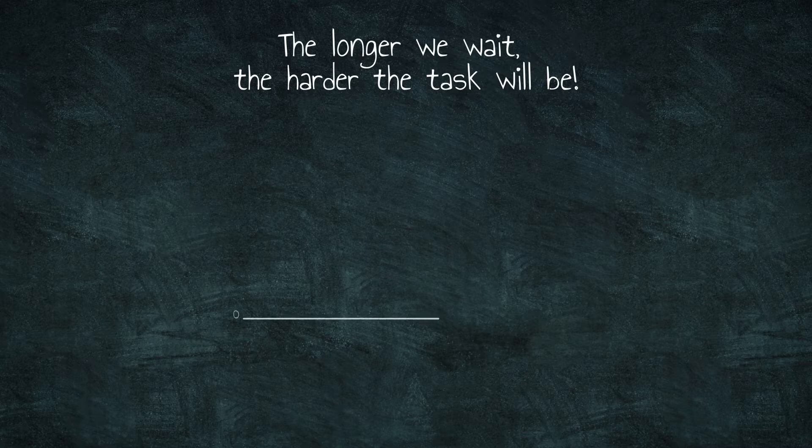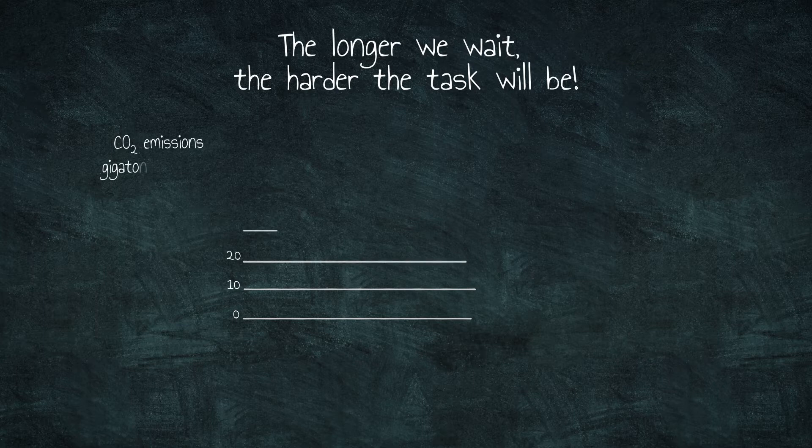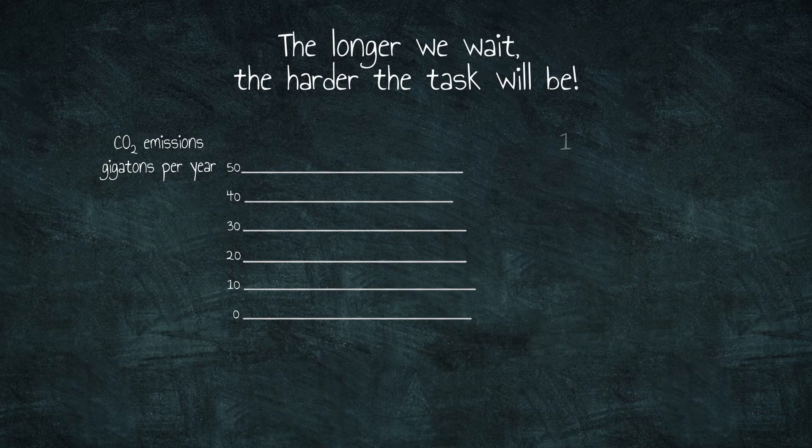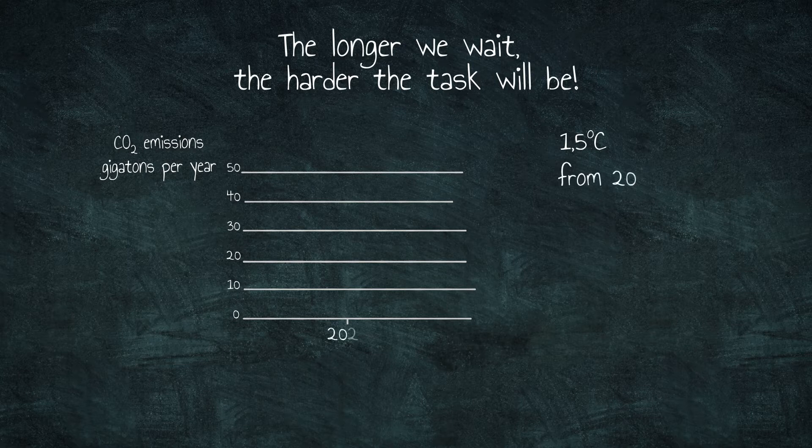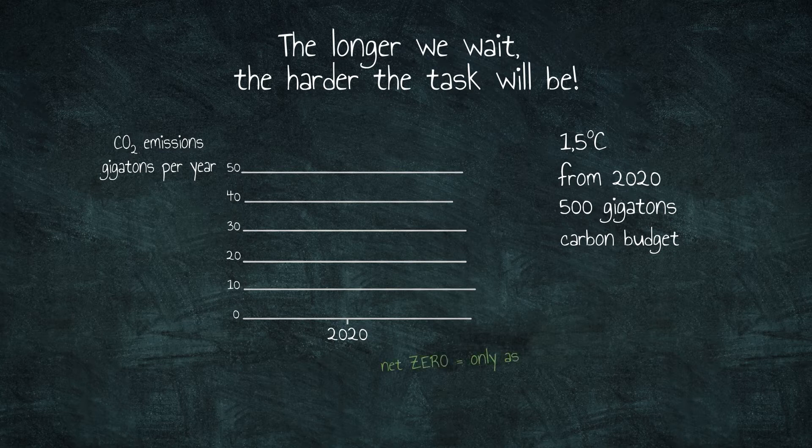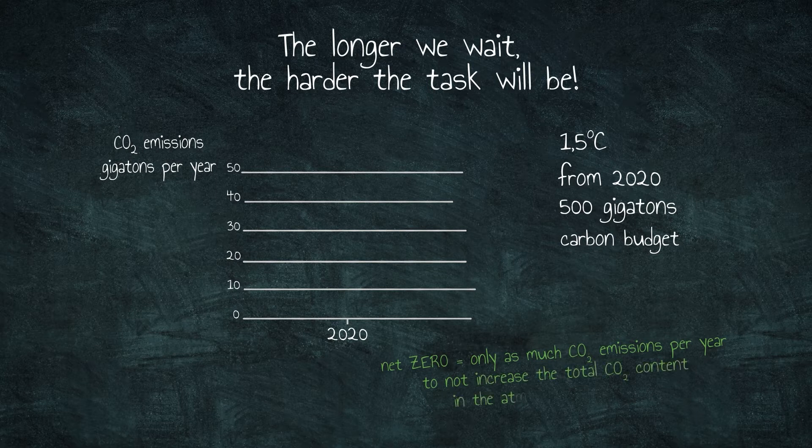This highly simplified animation shows why it's important to take action immediately and not put off this task. This animation makes no attempt to represent all the uncertainties, nor is this necessary to understand our situation. Let's first assume that starting from 2020, we still have a budget of 500 gigatons of CO2 available to meet the 1.5 degree climate target. The global community could still emit a total of 500 gigatons of CO2 before net zero emissions have to be reached.